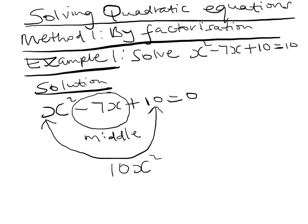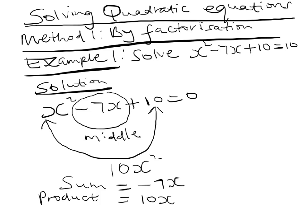We now obtain two factors whose sum is equal to the middle term, negative 7x, and whose product is equal to 10x squared. We look for two factors that add up to negative 7x and when multiplied give 10x squared. The two factors are negative 5x and negative 2x.